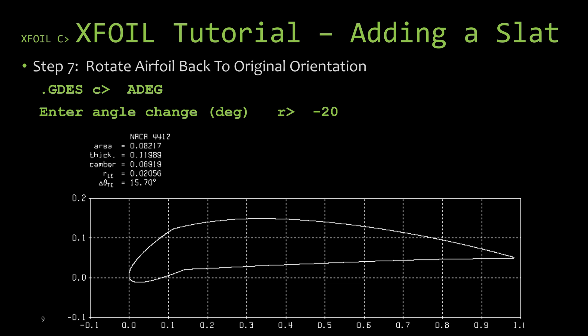We're now going to rotate the entire airfoil negative 20 degrees, so that our airfoil is rotated to be at zero degrees and our slat is rotated to be at 20 degrees deflection.